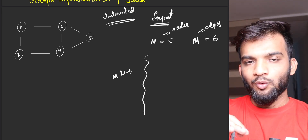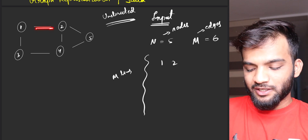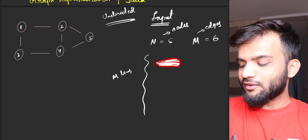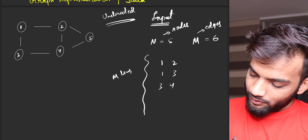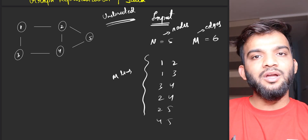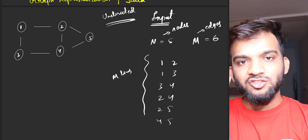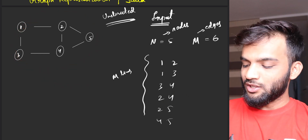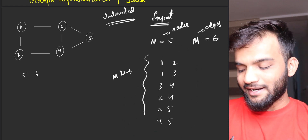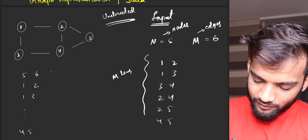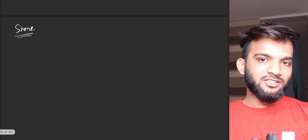I'm talking about undirected graphs for now — at the end I'll tell you the change required for directed graphs. They can give you an edge as '1 2' or '2 1', either is fine. The order can be anything — '1 3' can come first, '2 4' can come first — as long as all edges are listed. So the input looks like: '5 6' for n and m, then '1 2', '1 3', and so on till '4 5'.